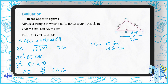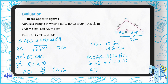You can also find CD using the Euclidean theorem. For AD: AC × AB = AD × BC, so 6 × 8 = AD × 10, giving AD = 48 ÷ 10 = 4.8 centimeters.